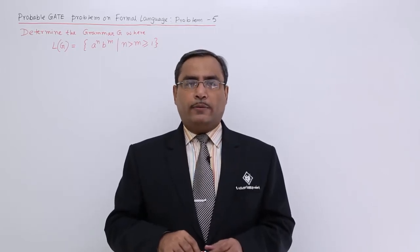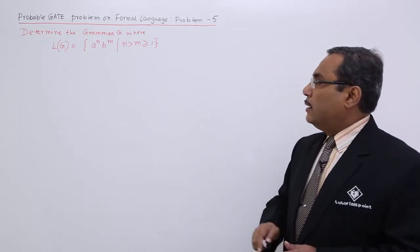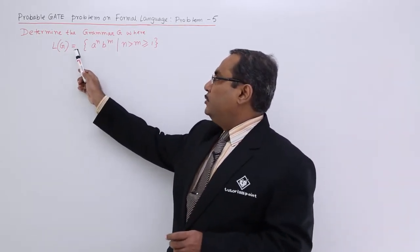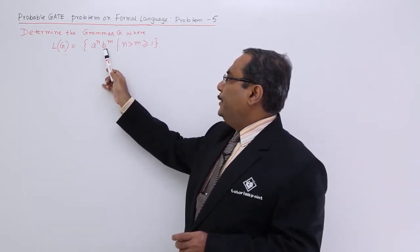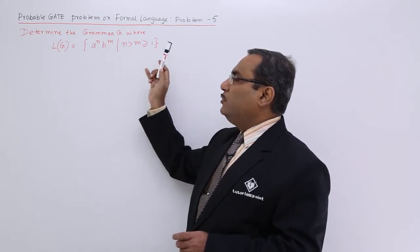Let us go for another problem on formal language. The problem here is like this: Determine the grammar G where L(G) is equal to a to the power of n, b to the power of m, where n is greater than m and m is greater than or equal to 1.